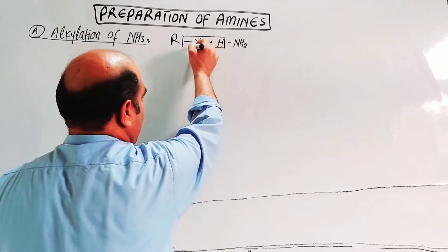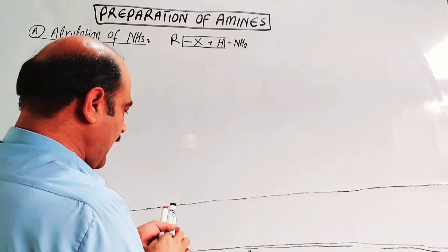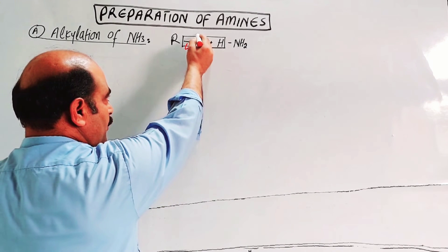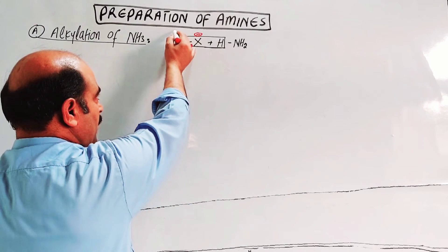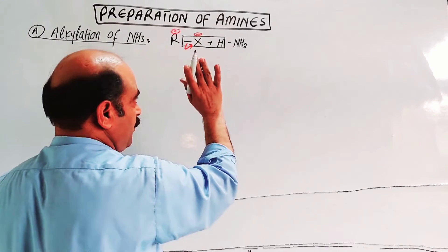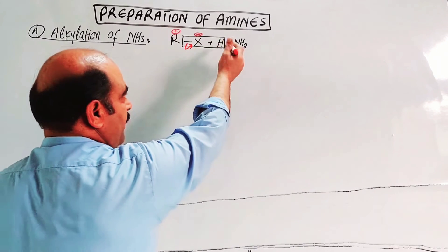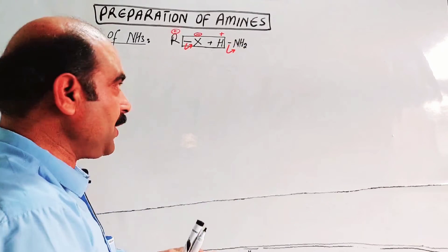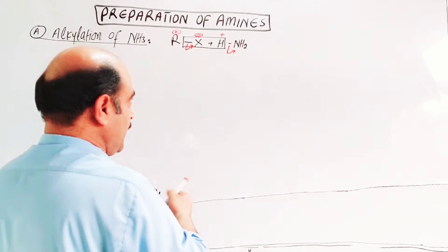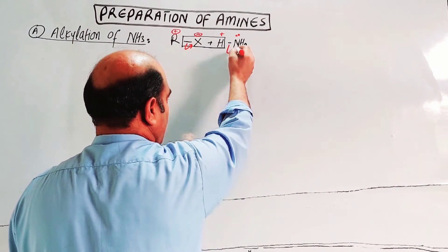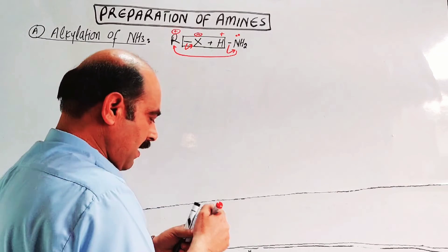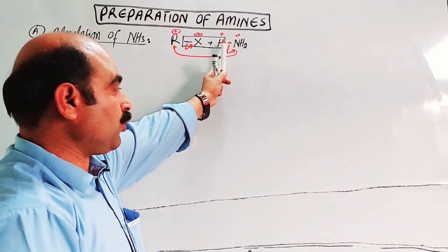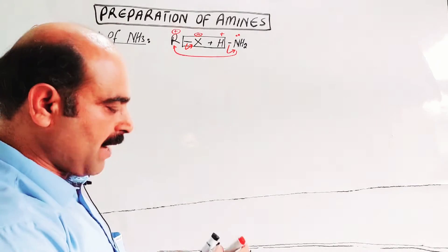In the alkyl halide, the halogen atom is removed in the form of a halide ion. Both bonded electrons shift towards the more electronegative halogen atom, giving it partial negative charge, while the alkyl carbon becomes partially positive. Meanwhile, hydrogen is removed from ammonia in the form of a hydrogen ion, as the more electronegative nitrogen gains partial negative charge. Nitrogen already has a lone pair of electrons which attacks the alkyl carbon, and the alkyl group attaches to nitrogen in place of one of its hydrogens. This is why it is called alkylation of ammonia.